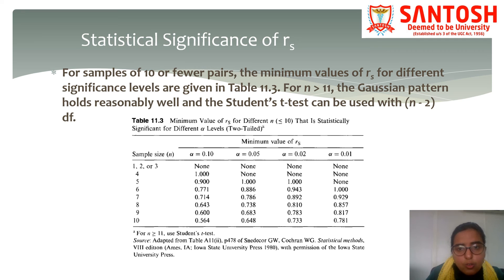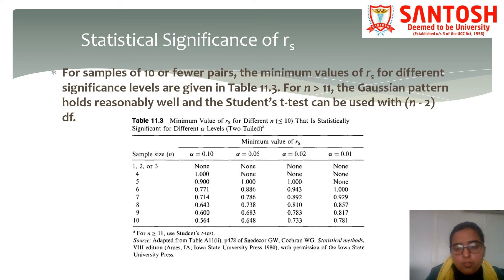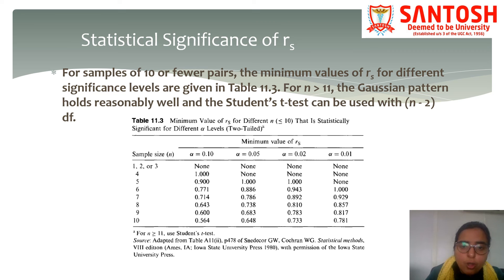For the statistical significance of the rank correlation coefficient: in the case of sample sizes of 10 or fewer pairs, the minimum value of r for different significance levels is given in table 11.3. After calculating, you compare your value with the tabulated value. For n greater than 11, the Gaussian pattern holds reasonably well and the Student's t-test can be used.